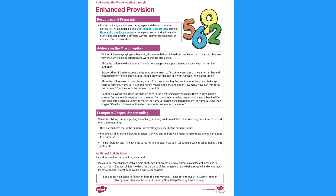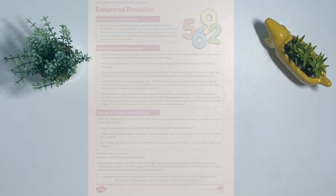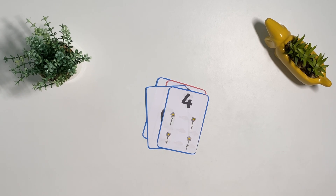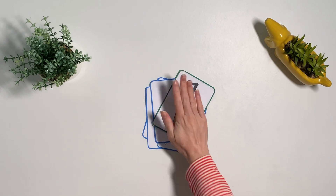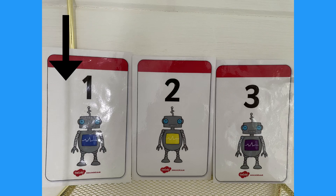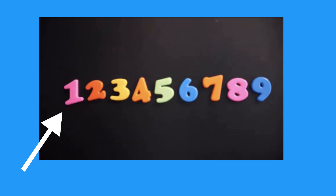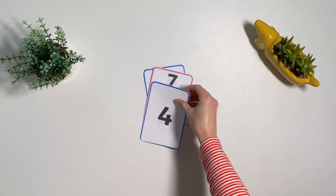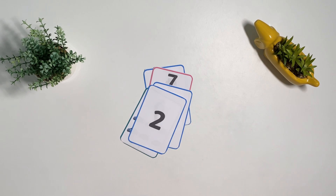You may then want to try out our enhanced provision activities. In this activity, children will start off by playing a game of snap with an adult. Can they find other numbers in their environment which match the snap? You can then continue to play your game of snap together.